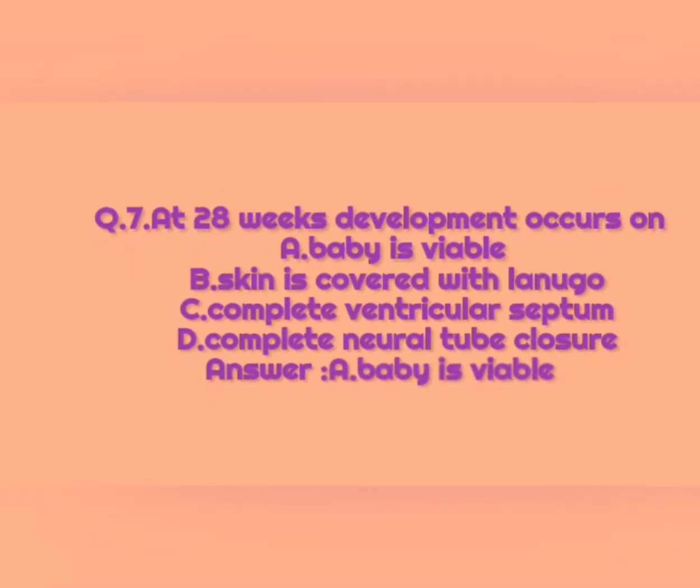Question number seven: At 28 weeks, development occurs on — option A: baby is viable, option B: skin is covered with lanugo, option C: complete ventricular septum, option D: complete neural tube closure. The correct answer is option A, baby is viable.